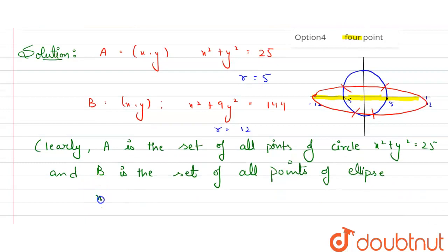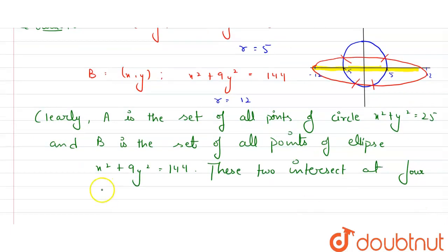And B is the set of all points of an ellipse and the equation of the ellipse is x²+9y²=144. These two intersect at four points.